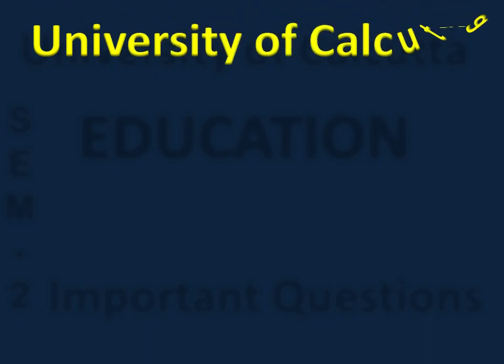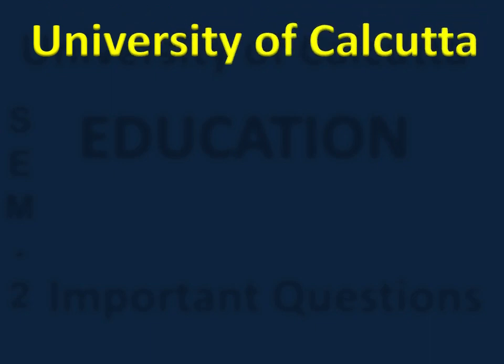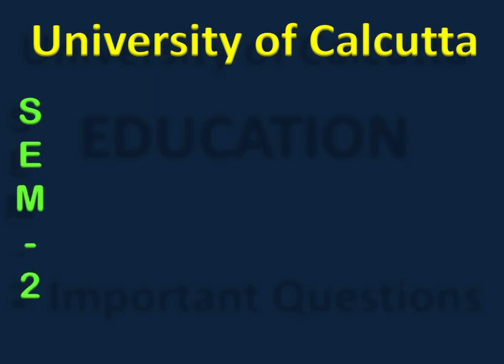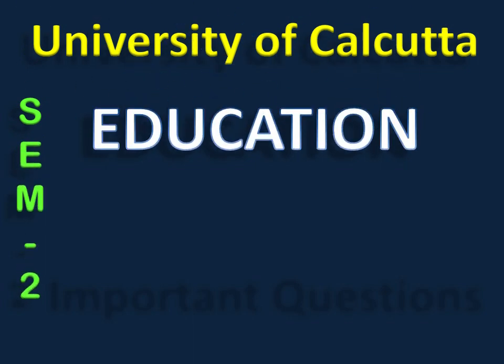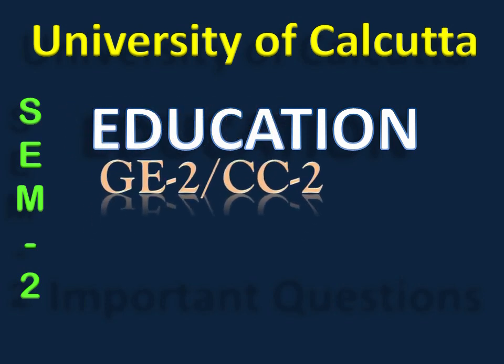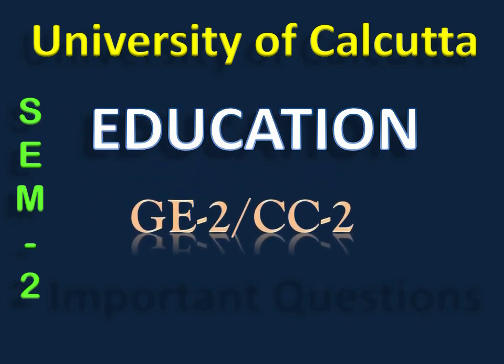In the University of Calcutta, the semester system starts. In the semester system, the second semester has the education subjects GE2 and CC2. GE2 is generally important — GE2 is more important than honors.